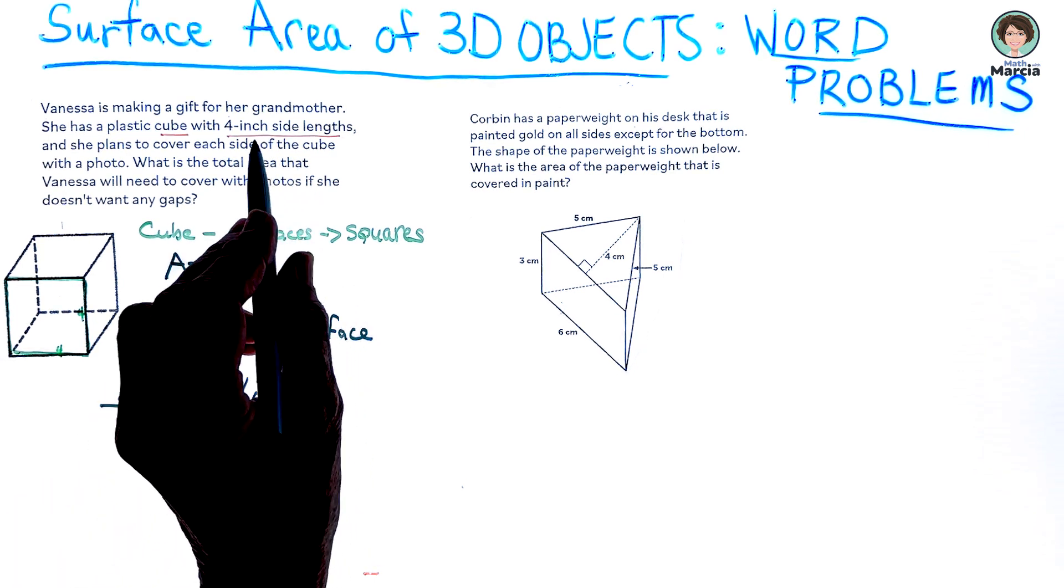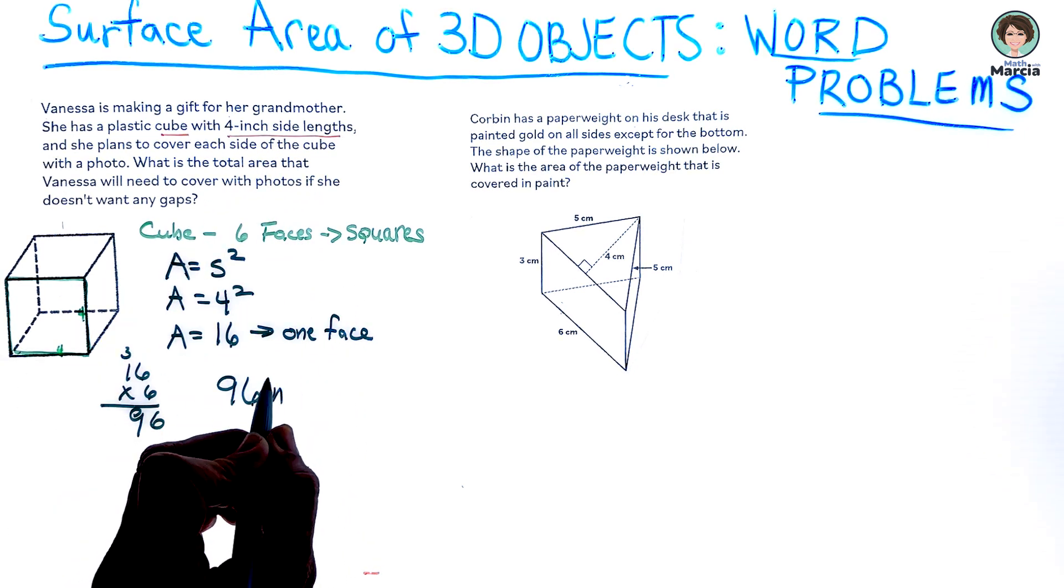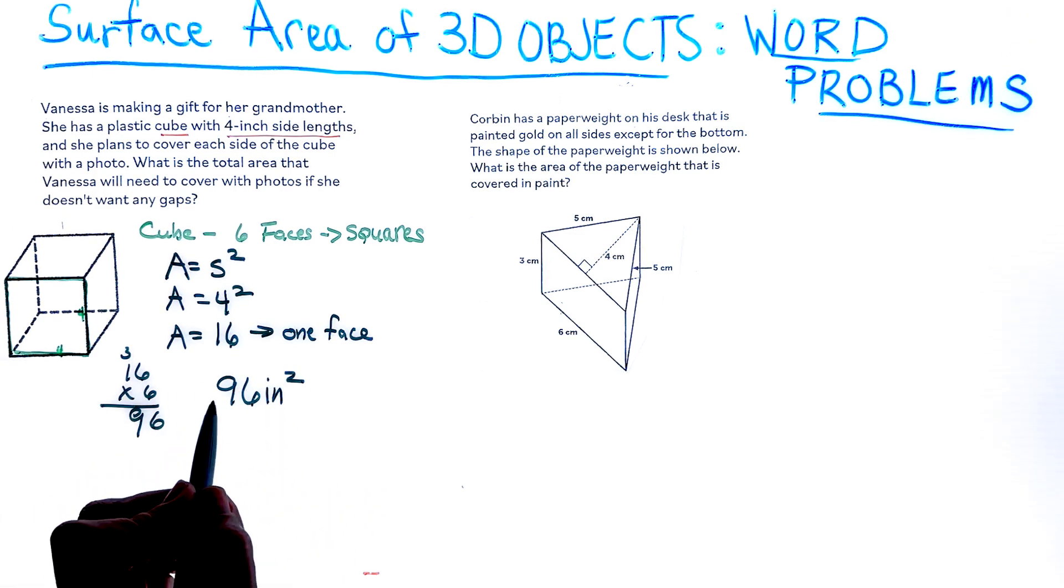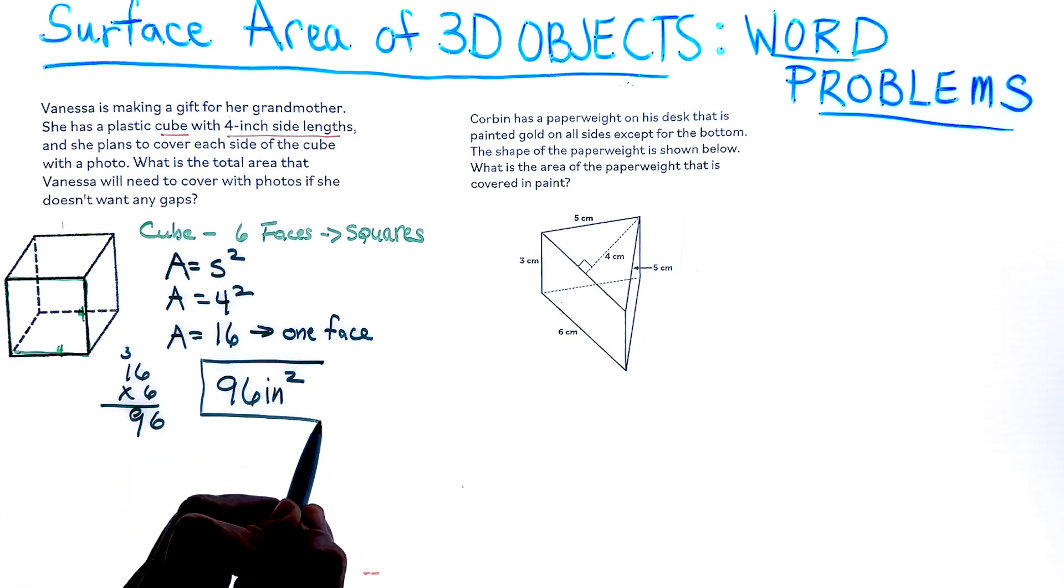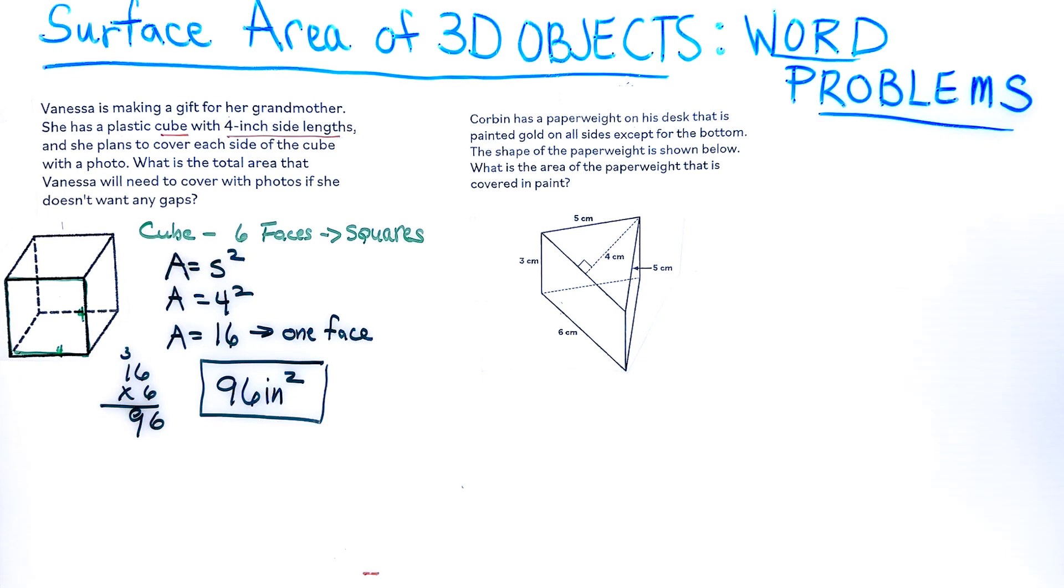When we do that we get 96, and it will be 96 inches squared, which is the surface area of this cube. There is our answer.